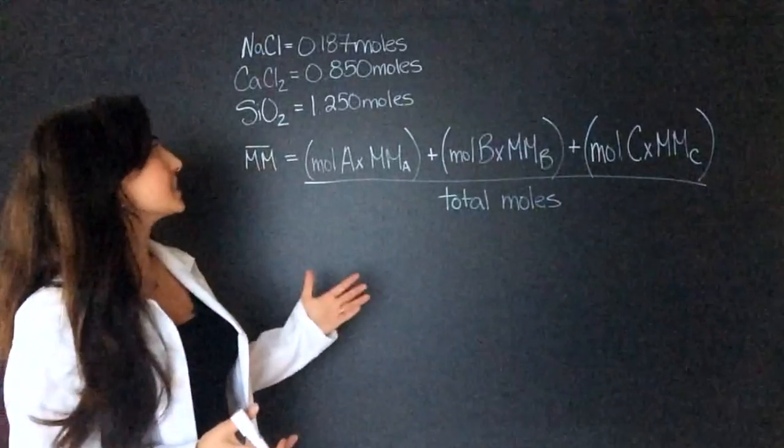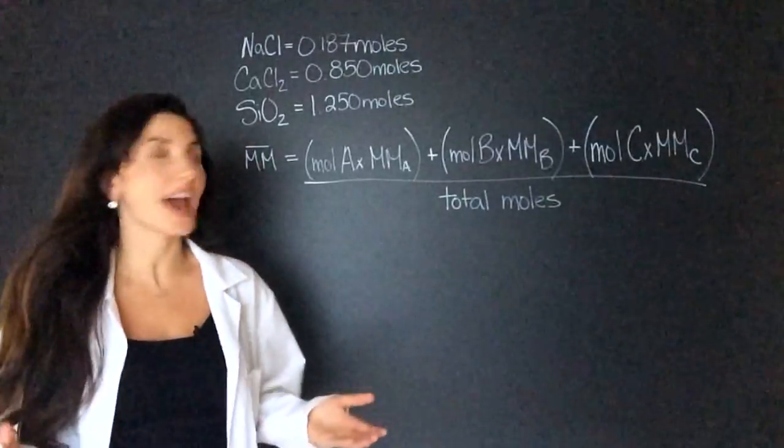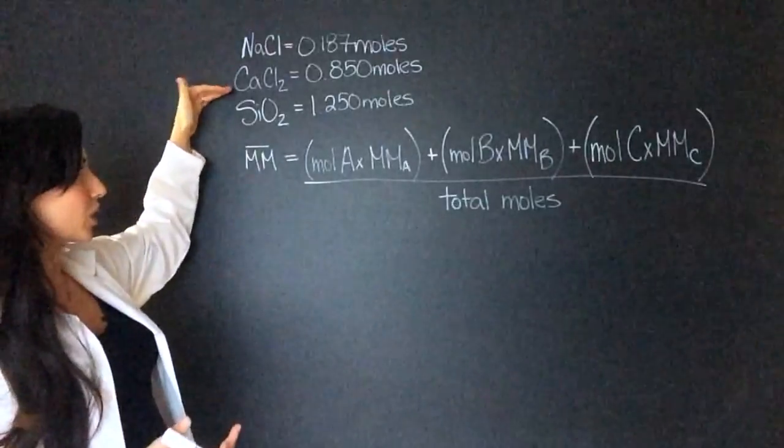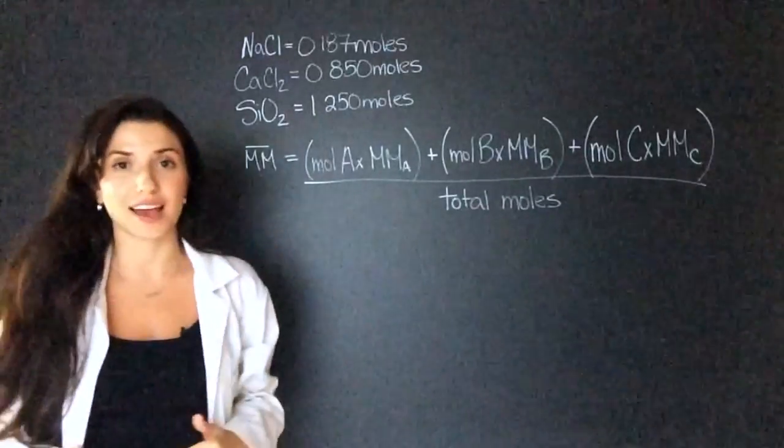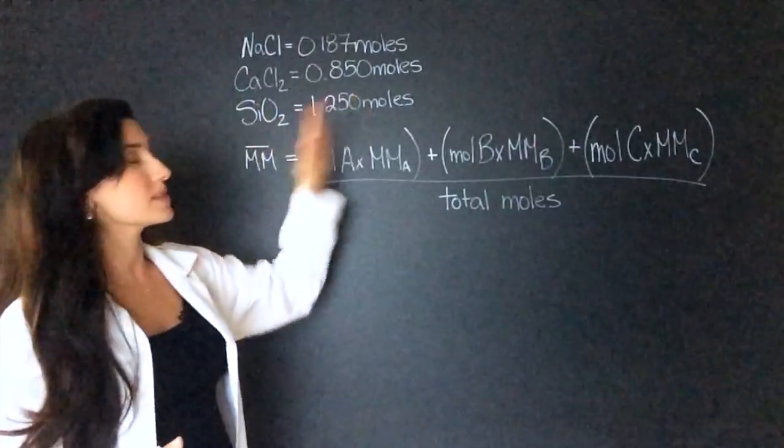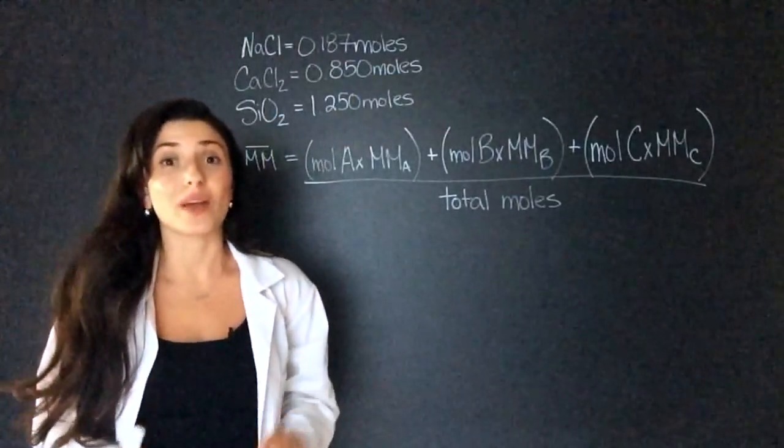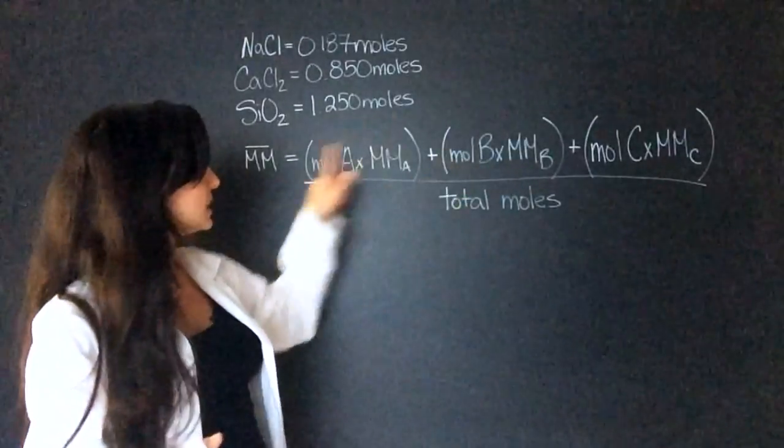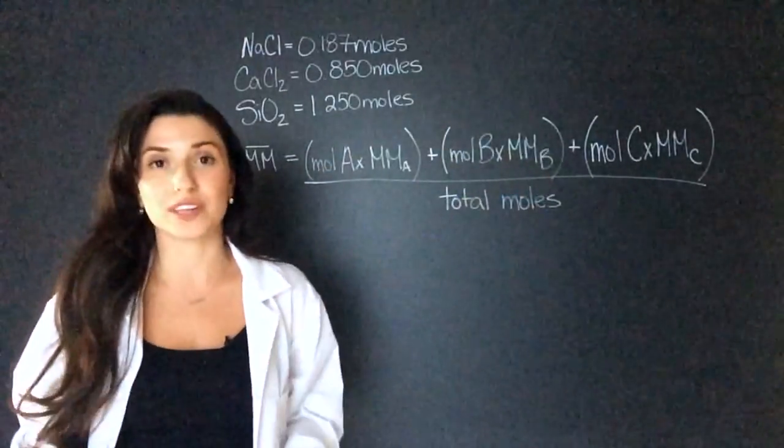The question tells us that the solution has three molecules in it: sodium chloride, calcium chloride, and silicon dioxide. It tells us the moles of each one. Now if the question doesn't tell you the moles, you will have to find the moles because we need the moles of each for the equation.